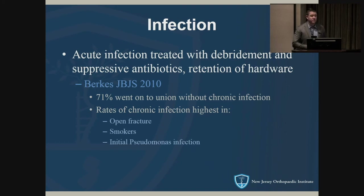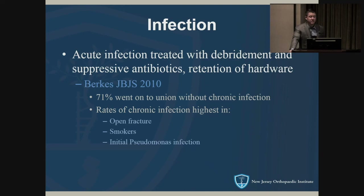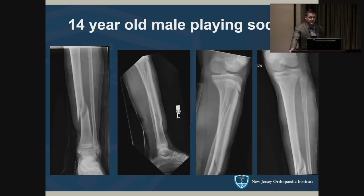For an infected fracture that has not healed, options are limited — you need to wash it out, treat with antibiotics, and hope the fracture heals. A JBJS study found that with irrigation, hardware retention, and antibiotics, 71% of patients went on to union. The chronic infection risk was highest in open fractures, smokers, and patients with initial Pseudomonas infection.